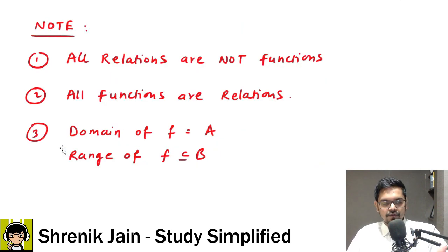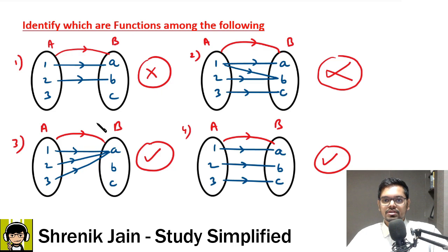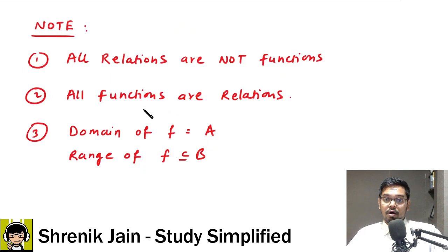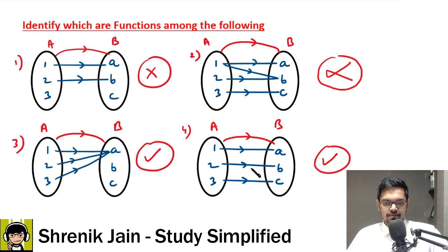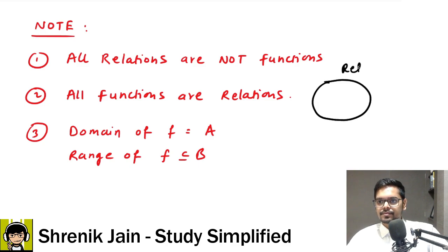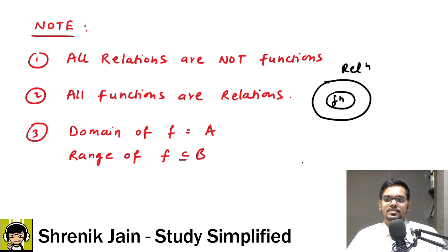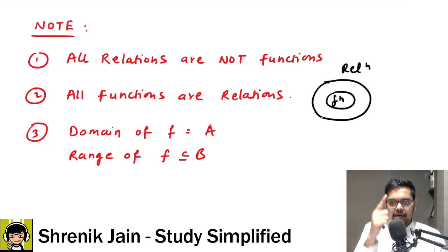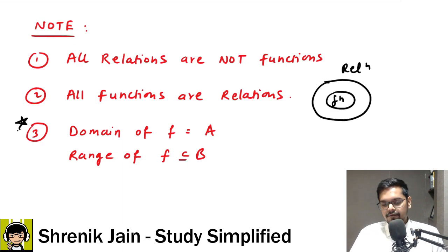An important note: all relations are not functions, but all functions are relations. Relations are the parent; functions are their special child — a special case satisfying two properties: one input leads to one output only, and every input must be linked to some output.